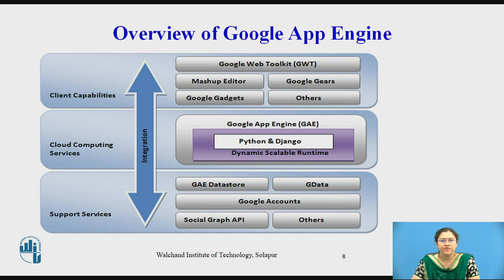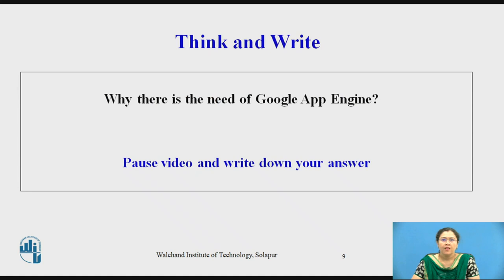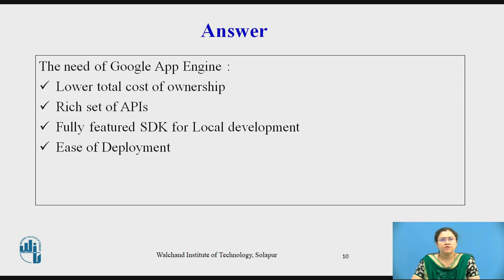Between these three categories, integration is necessary when we want to launch or deploy a particular app. Pause the video and write down your answer: why is there a need for Google App Engine? The answer: the need for Google App Engine is because of its lower total cost of ownership, a rich set of APIs, fully featured SDKs (software development kits) for local development, and its ease of deployment. You can easily deploy or integrate your application with the help of Google App Engine.